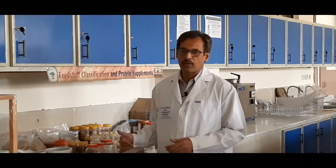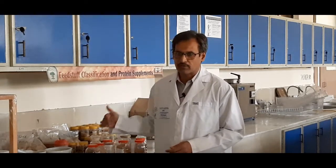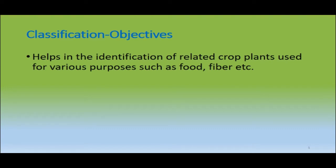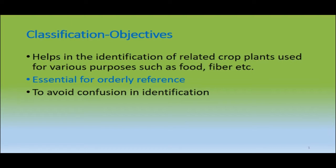We have different classes of feedstuffs and under each class we will discuss different types of feedstuffs and their characteristics. Why do we go for classification of feedstuffs? Here are some objectives of classification. They help in the identification of related crop plants used for various purposes such as food and fiber. That makes identification easier and they are essential for orderly reference. This classification is quite helpful to avoid confusion in identification because sometimes the same feedstuffs have different names in different countries. The common example is corn, which in some countries is known as maize.